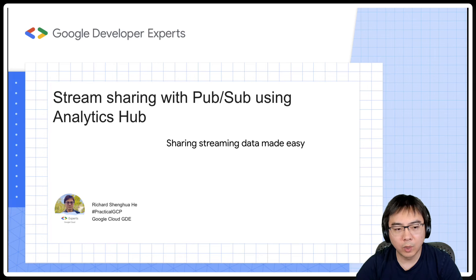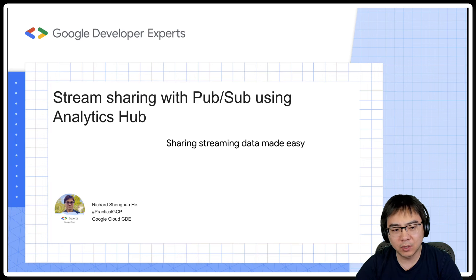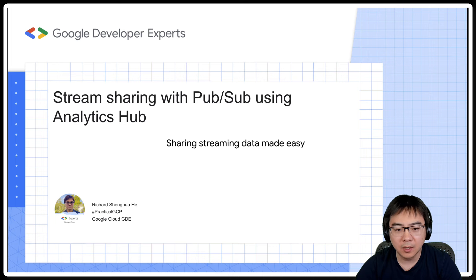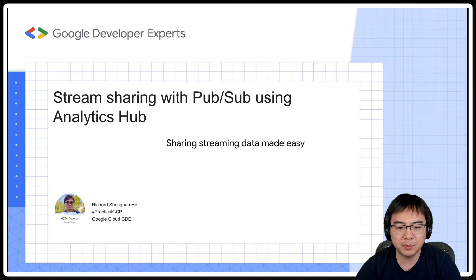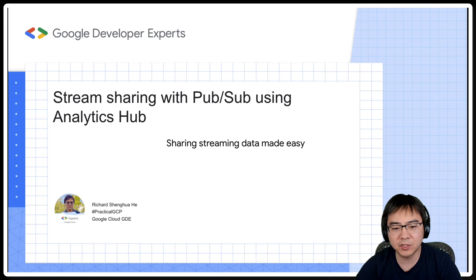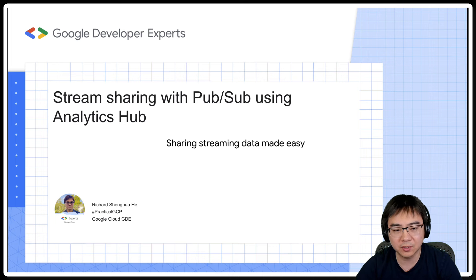Hello everyone. Welcome to Practical GCP. Today I'll cover a topic on a very recent release — a new feature just been added to Analytics Hub. Now you can use Analytics Hub to share PubSub topics between projects. This is going to make sharing streaming data a lot easier, especially for large organizations.